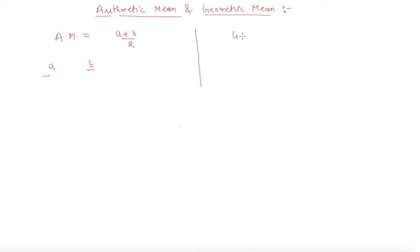Similarly, what is geometric mean? Geometric mean is, let's say we are given again the same two numbers A and B. The geometric mean will be root A times B.